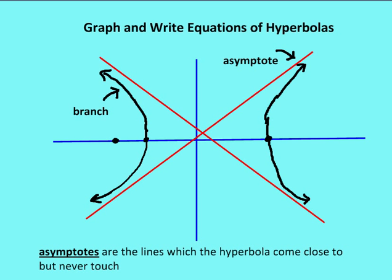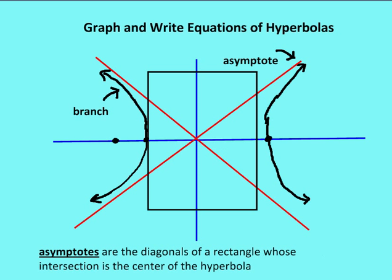It helps to draw the asymptotes when graphing. You form them as diagonals through the center of the hyperbola, and their slopes involve both the a and b values depending on the orientation of the transverse axis. Using the equation c² = a² + b², you can use the a and b values to find the slope of the asymptotes once you have the equation for the hyperbola set up.